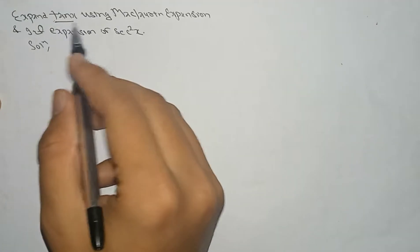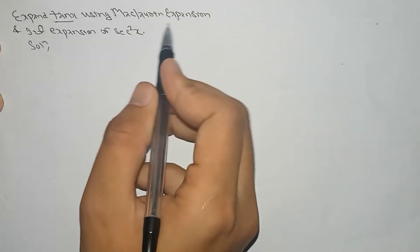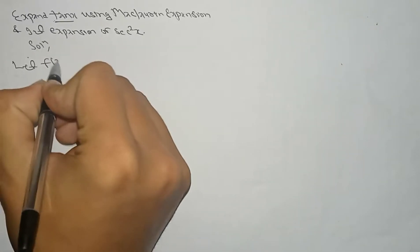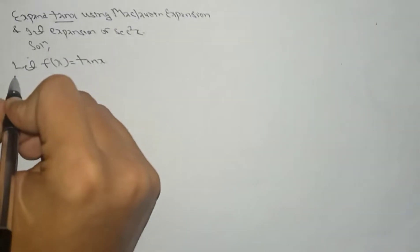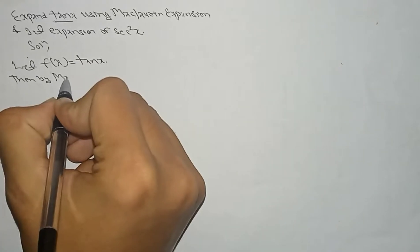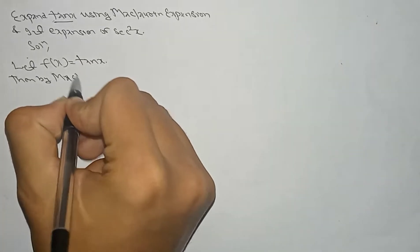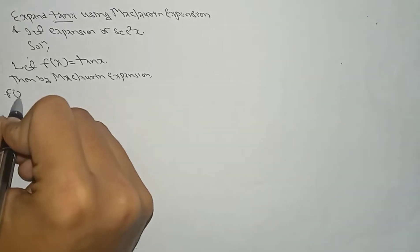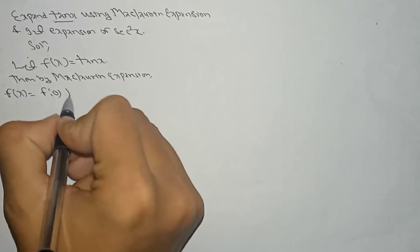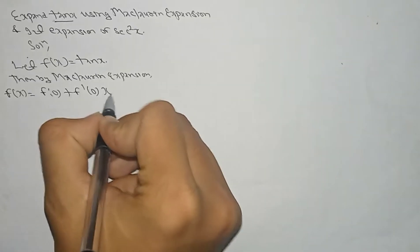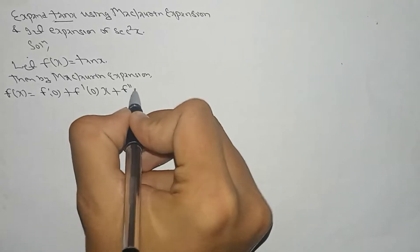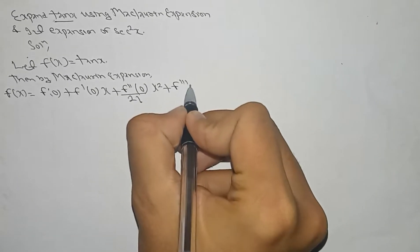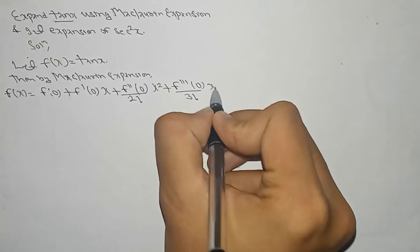Here we go. The problem is to expand tan(x) using Maclaurin expansion and get the expansion of x squared. For this solution, let y(x) = tan(x). By Maclaurin expansion, we have the formula: y(x) = y(0) + y'(0)·x + y''(0)/2! · x² + y'''(0)/3! · x³ + ...